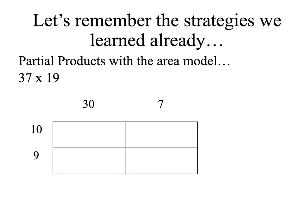Then I multiply 30 times 10 and 7 times 10, 30 times 9 and 7 times 9. Using my basic facts I find these answers. 3 times 1 is 3 and I add two zeros. 3 times 9 is 27, 1 zero for the 10. 7 times 1 is 7, 1 zero for the 10 and 7 times 9 is 63.